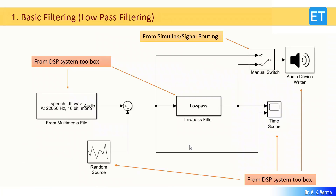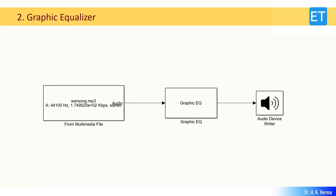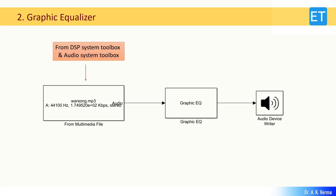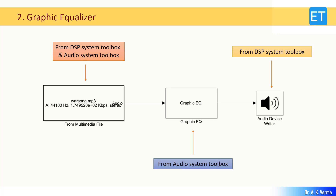The next effect is the graphic equalizer. I hope all of you are familiar with this — during music playback using either a hardware or software player, this facility is generally provided where you can boost a particular frequency or suppress a particular frequency to create a desired effect such as pop, rock, jazz, or metal. The 'From Multimedia File' block can be obtained from the DSP and Audio System Toolbox, the audio device writer from the DSP System Toolbox, and the graphic equalizer from the Audio System Toolbox.